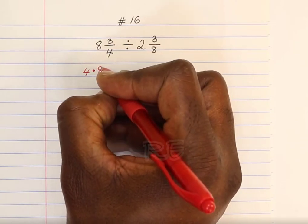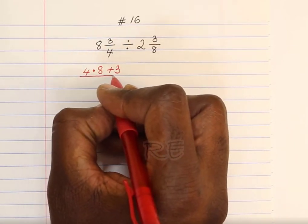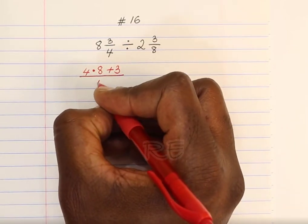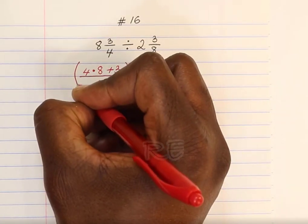We are going to transform the mixed number into an improper fraction. We're going to multiply 4 by 8, add it to 3, divided by 4.